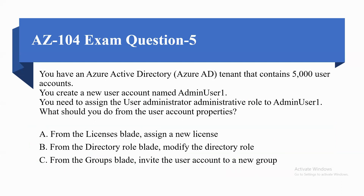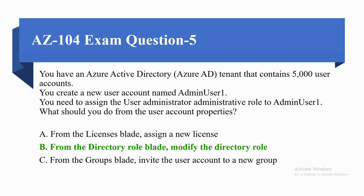Question five: You have an Azure Active Directory tenant that contains 5000 user accounts. You create a new user account named Admin User 1. You need to assign the User Administrator administrative role to Admin User 1. What should you do from the user account properties? The correct option is option B: from the Directory Role blade, modify the directory role.